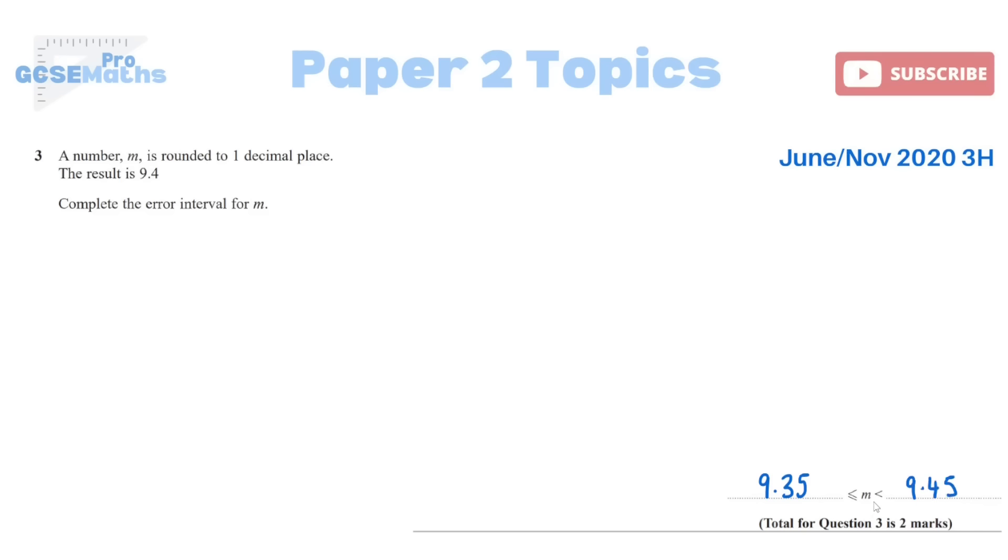Now with error intervals, they do include the inequality symbols. Obviously, it's not equal to 9.45 because that would round up to 9.5. It's just saying anything slightly less. So that accounts for the option of it being 9.44999999 to infinity, right? That accounts for it. A little bit less, a little bit more. Same as upper and lower bounds.